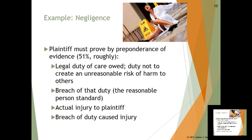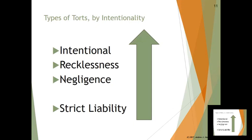Let's talk about categories of common torts. I want to rank these by intentionality. We have negligence at the bottom, recklessness in the middle, and intentional torts at the very top. Strict liability is a little different — we'll talk about that last. I want to cover these common categories first, then the degrees of intentionality, and then get into specific tort causes of action. I don't want to start with the specifics because there's a whole universe of torts — the big picture first.